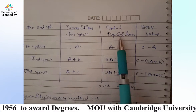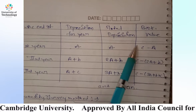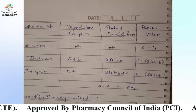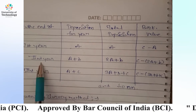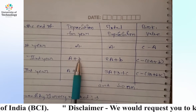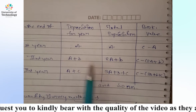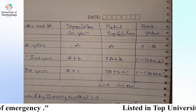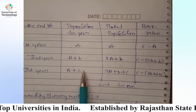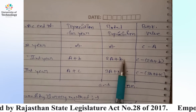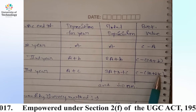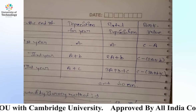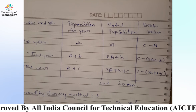For the first year, depreciation per year is A. Book value equals total cost C minus depreciation A. For the second year, depreciation is A plus B, where B is the second year's interest on the sinking fund. Total depreciation is 2A plus B. Book value for second year is C minus total depreciation. For the third year, depreciation is A plus C, and so on. This method is useful. It relates to the constant percentage method and sinking fund concepts.